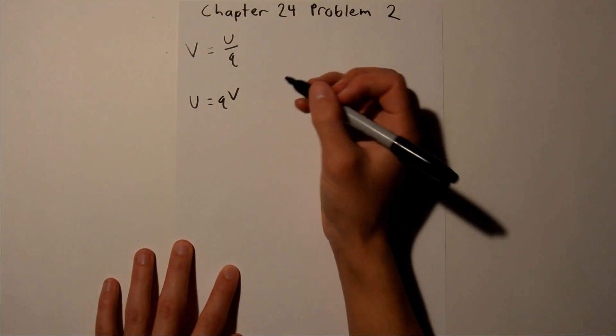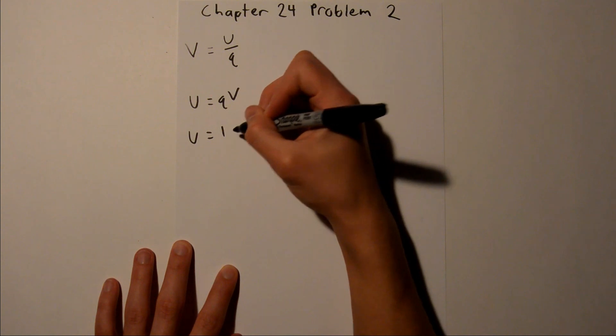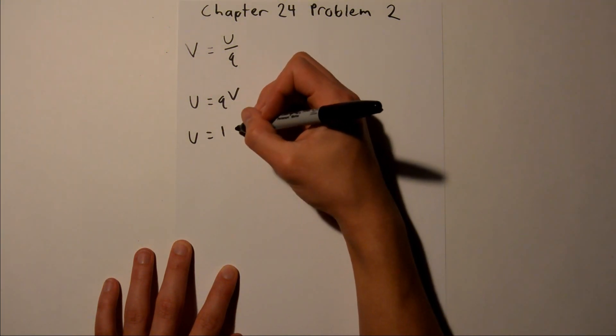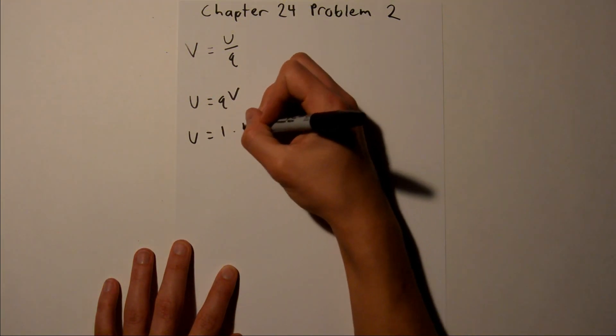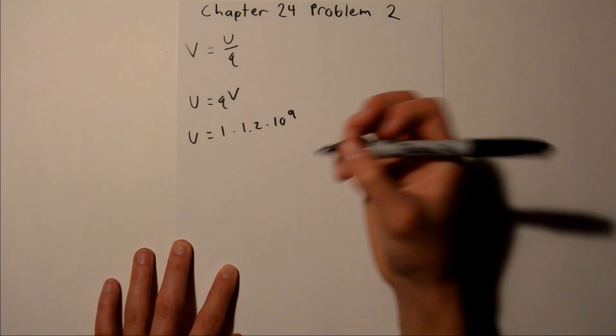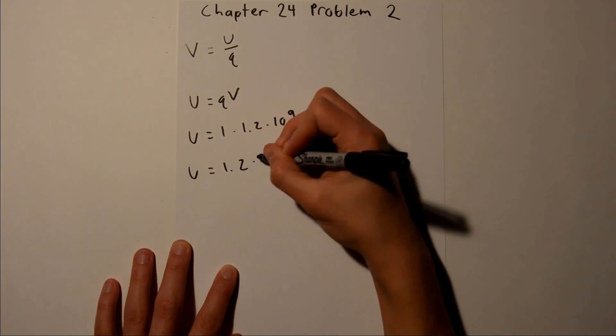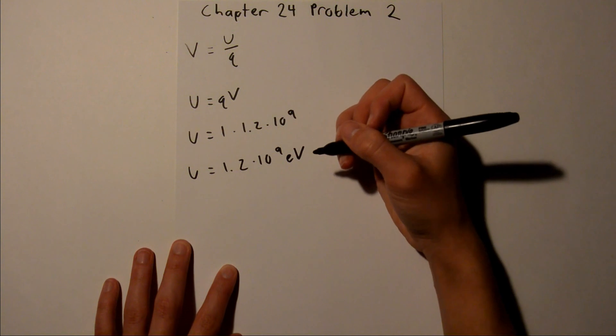And both of those values we have. Our charge is 1 electron, and our potential is 1.2 times 10 to the 9th, so our final answer is equal to 1.2 times 10 to the 9th electron volts.